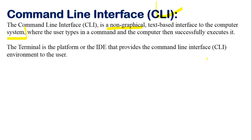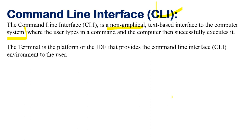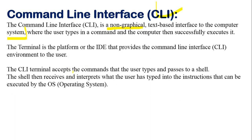In Windows we get full GUI mode, but in Linux you will mostly be using the terminal to execute commands. The CLI terminal accepts the command the user types and passes it to the shell. In my previous video I spoke about the shell - it is the mediator between the kernel and the hardware.